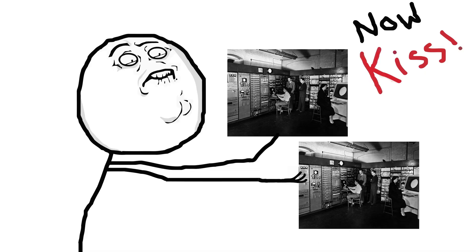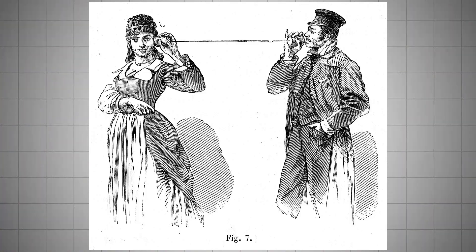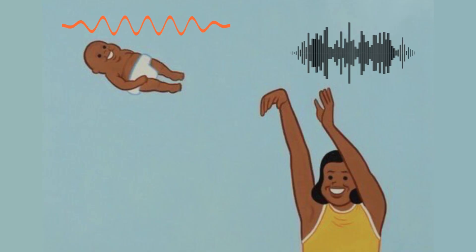But how do we make this computer talk to another computer? We connect them with a wire — kind of like phones, only entirely differently. Phones turn your voice into an analogue signal and send it.